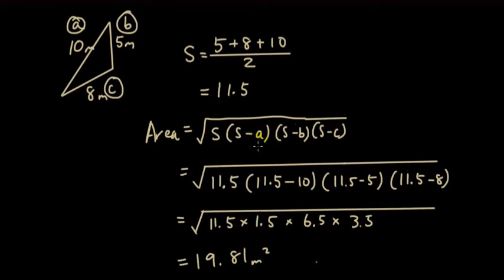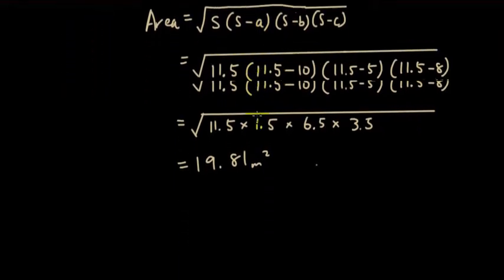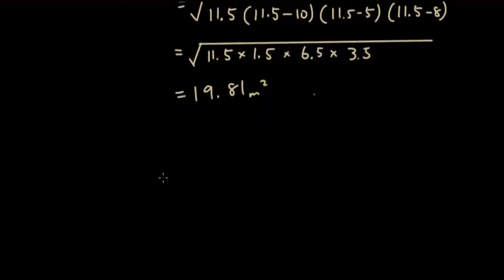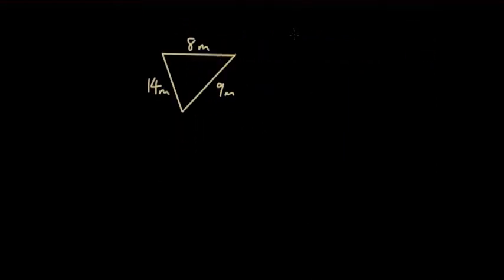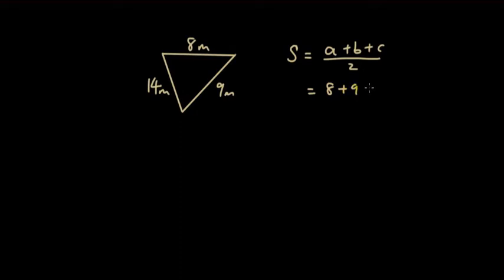Let's do one more example to consolidate your knowledge. Find the area of this triangle. First, let's get s: s equals all three sides added together divided by 2, which is 8 plus 9 plus 14, divided by 2. Typing that into the calculator, the answer is 15.5.